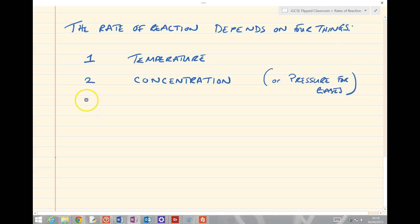Number three might be if we added a catalyst. Perhaps you might have thought of enzyme if you were thinking about biology, but in chemistry we're going to make sure we use the word catalyst. And finally number four, the size of particles, particularly that affects what we're talking about in a solid. Sometimes we can describe this as surface area.